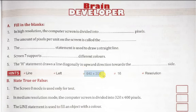640 by 200. The amount of pixels per unit on the screen is called the resolution. The line statement is used to draw a straight line. Screen 7 supports sixteen different colors. And the H statement draws a line diagonally in upward direction towards the left side.